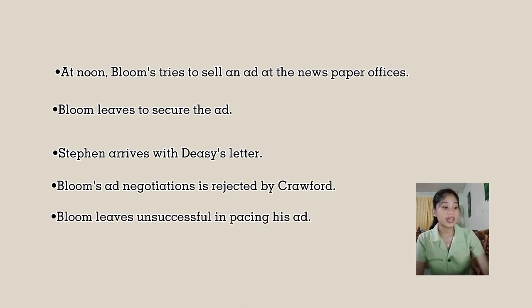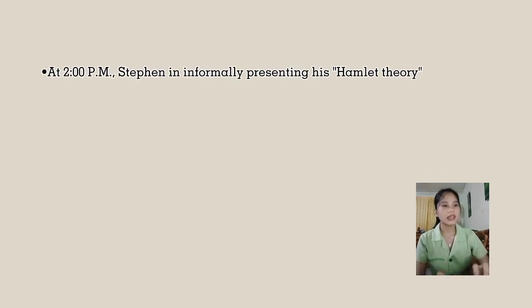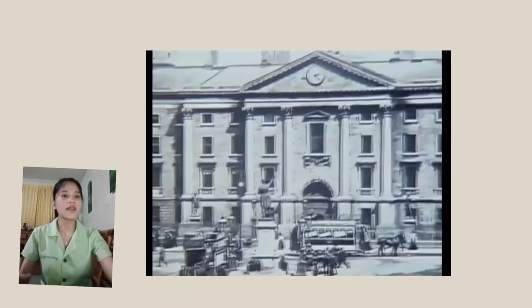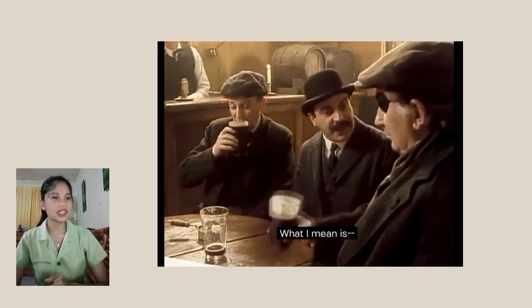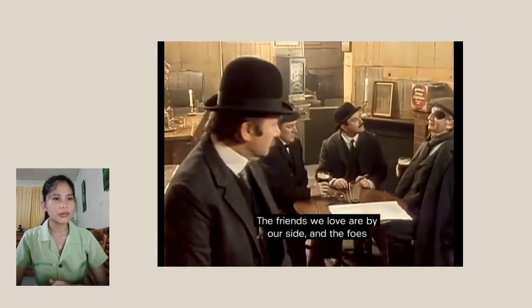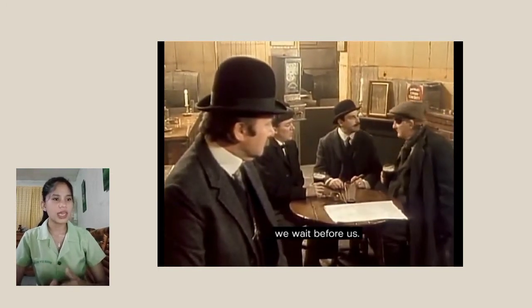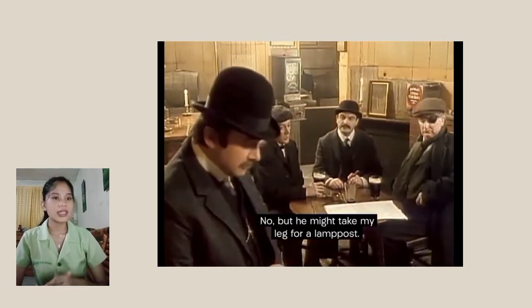At 2 p.m., Stephen is informally presenting his Hamlet theory in the National Library to the poet AE and the librarians John Eglinton, Best, and Lister. AE is dismissive of Stephen's theory and leaves. Buck enters and jokingly scolds Stephen for failing to meet him and Haynes at the pub. On the way out, Buck and Stephen pass Bloom, who has come to obtain a copy of Keyes' ad. At 5 p.m., Bloom arrives at Barney Kiernan's pub to meet Martin Cunningham about the Dignam family finances, but Cunningham has not yet arrived. A citizen, a belligerent Irish nationalist, becomes increasingly drunk and begins attacking Bloom's Jewishness. Bloom stands up to the citizen, speaking in favor of peace and love over xenophobic violence. Bloom and the citizen have an altercation on the street before Cunningham's carriage carries Bloom away.